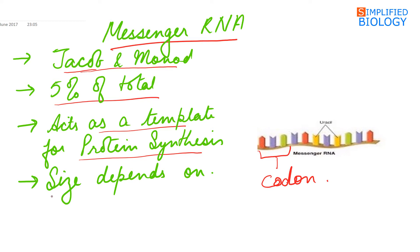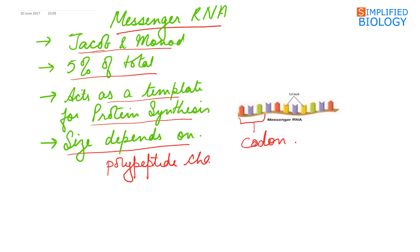The size of the messenger RNA depends upon the size of the polypeptide chain it is coding for, and whether it is monocistronic. Monocistronic is a part of DNA or RNA coding for a polypeptide chain. Monocistronic means coding for single polypeptide chain, seen in eukaryotes, or polycistronic, coding for many polypeptide chains, seen in prokaryotes.